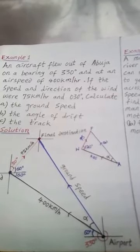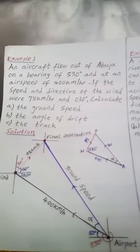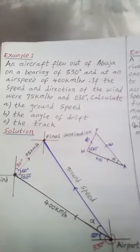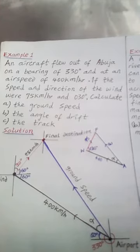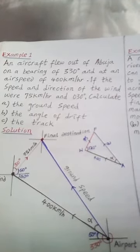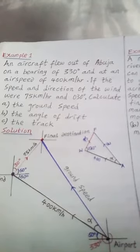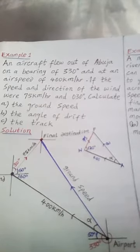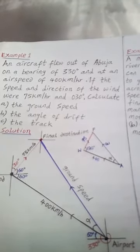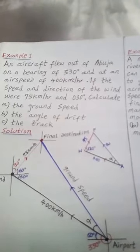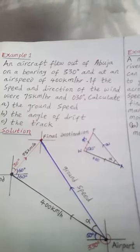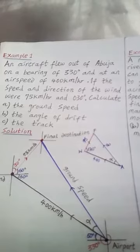In this case, we are going to see how this aircraft is being affected by the wind. The example says an aircraft flew out of Abuja on a bearing of 330 degrees and at an airspeed of 400 km per hour. If the speed and direction of the wind were 75 km per hour and 030 degrees, calculate the ground speed, the angle of drift, and the track.